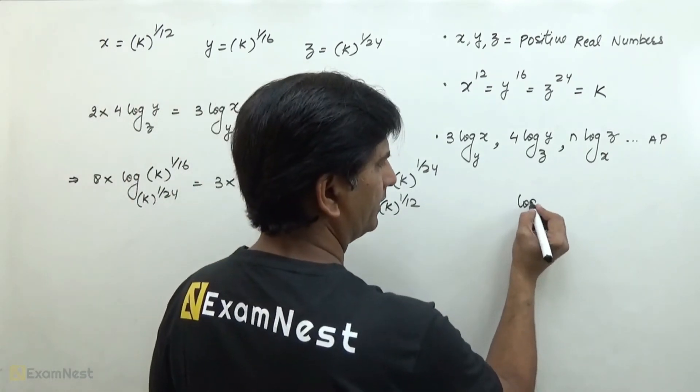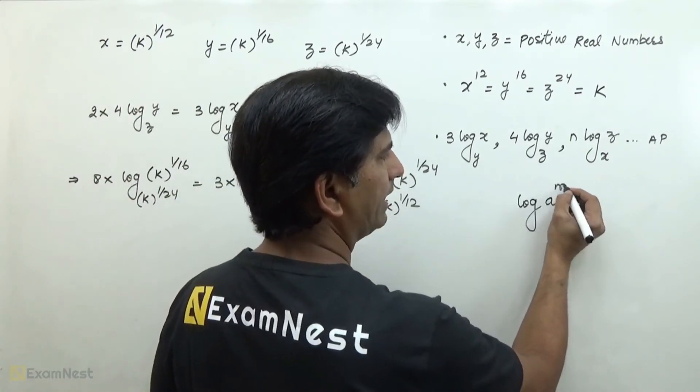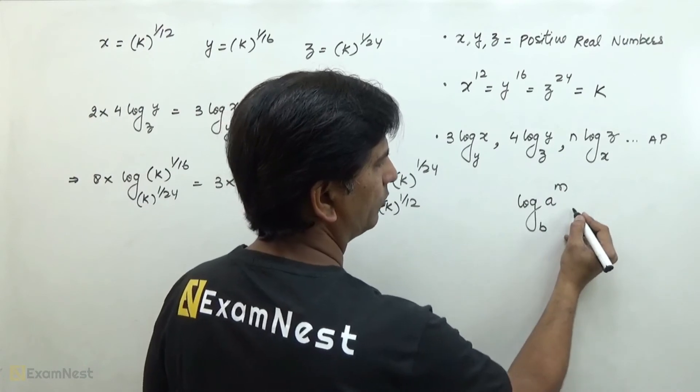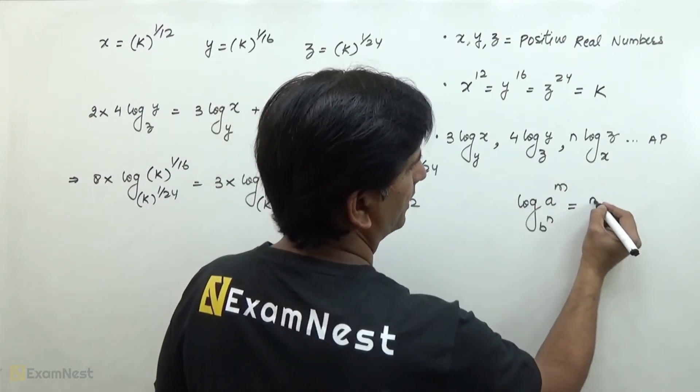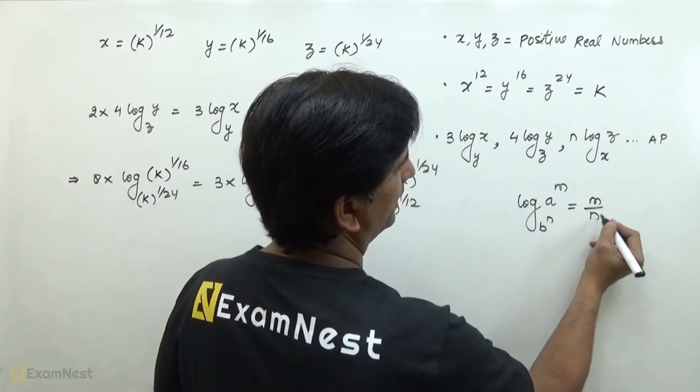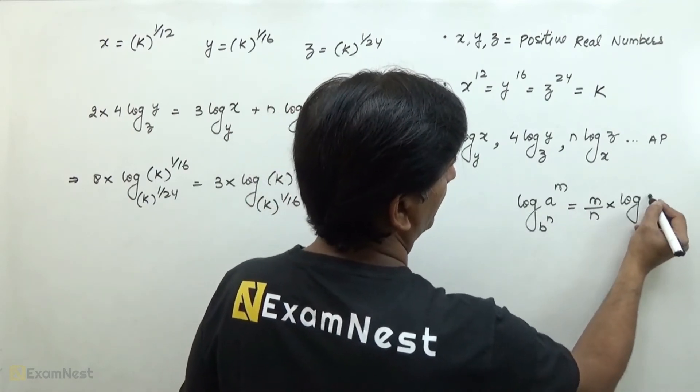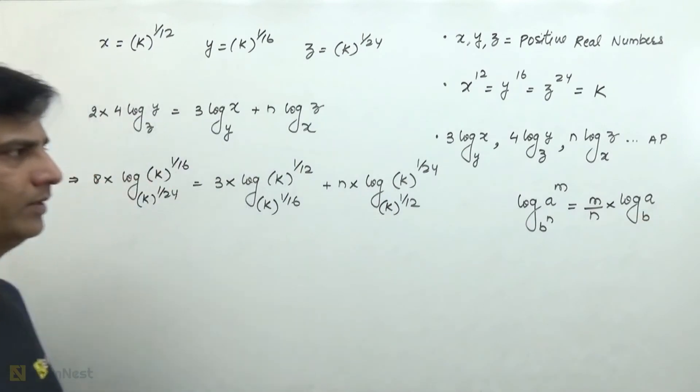There is a logarithm property that log of a raised to the power m to the base b raised to the power n, the number's power goes to the numerator and the base's power goes to the denominator.